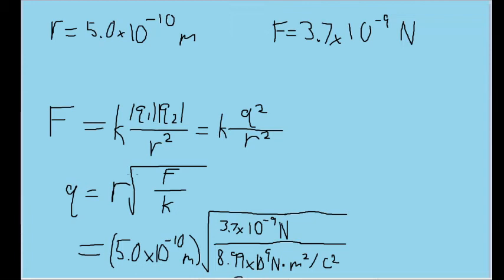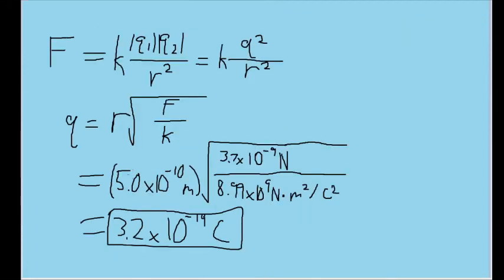Therefore, the total charge of the missing electrons will equal the magnitude of the excess positive charge on each ion.